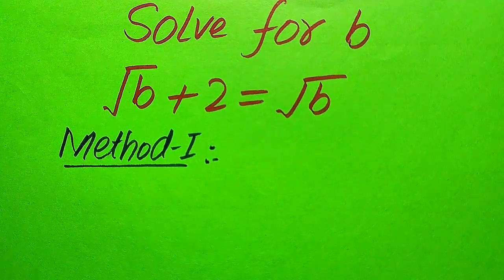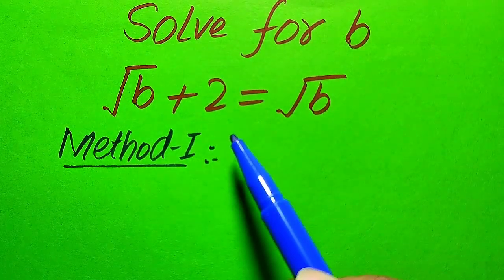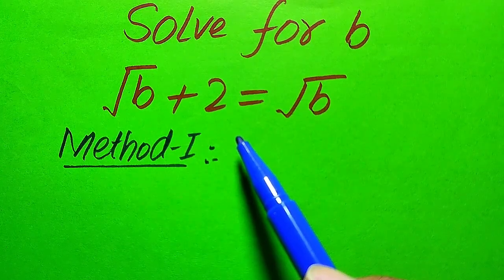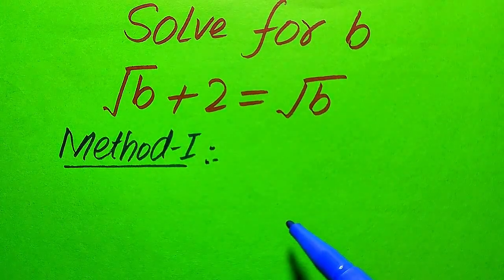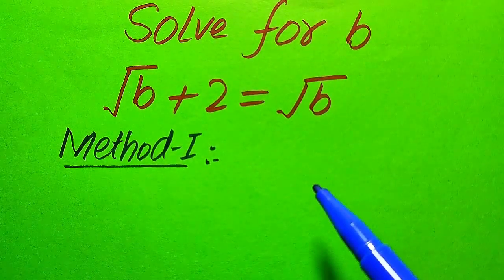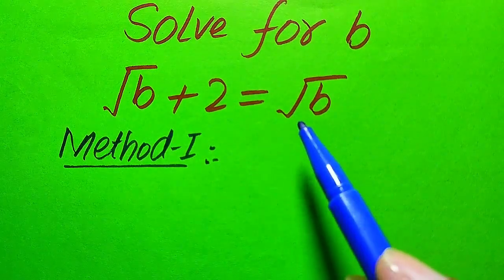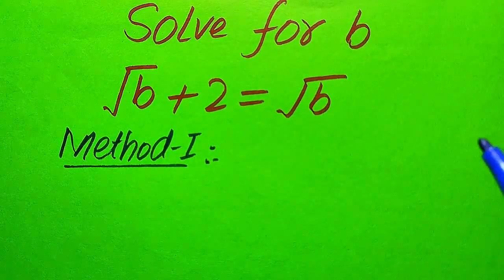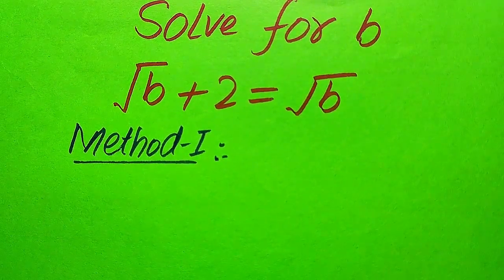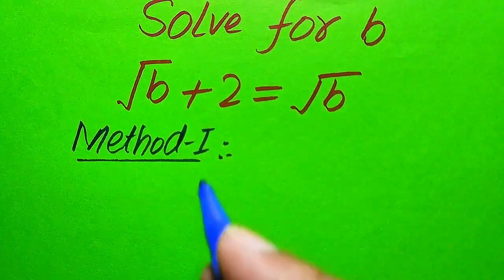The reason for solving with two methods is this: if your exam question asks you to find the roots or values of B, you can use method one. If the question asks you to determine the solution or whether this equation has a solution or not, you can directly use method two. However, both methods are valid for any question.